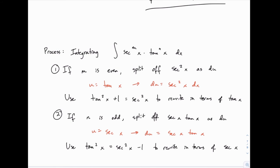If the power of secant is odd and the power of tangent is even, this approach will not work. In that case, your fallback is to rewrite things in terms of sine and cosine and see if something simplifies. We won't deal with those in this section, as we're focused on integrals that do fit this pattern.